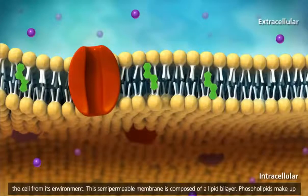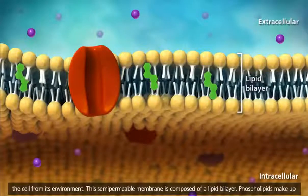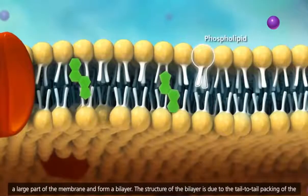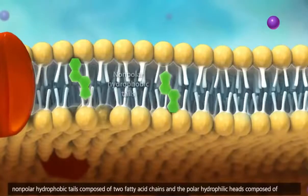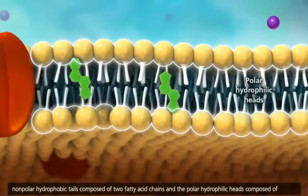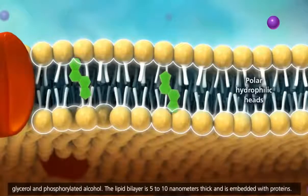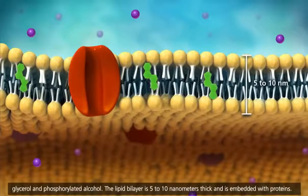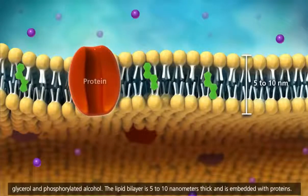This semi-permeable membrane is composed of a lipid bilayer. Phospholipids make up a large part of the membrane and form a bilayer. The structure of the bilayer is due to the tail-to-tail packing of the nonpolar hydrophobic tails, composed of two fatty acid chains, and the polar hydrophilic heads, composed of glycerol and phosphorylated alcohol. The lipid bilayer is 5 to 10 nanometers thick and is embedded with proteins.